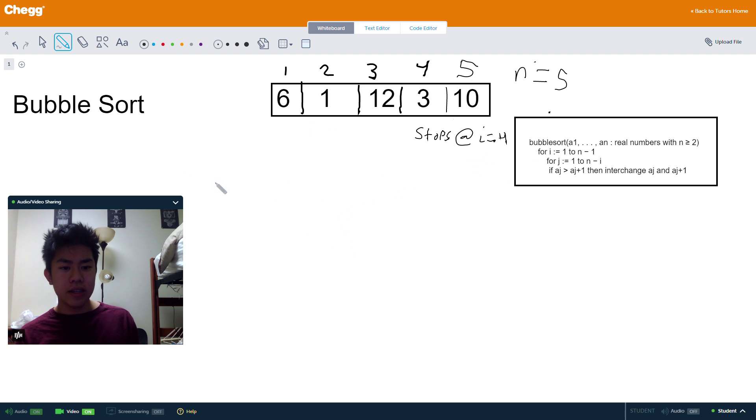Alright, let's run through the loop. I'm going to set i equal to 1. So i is 1 now. J is also 1. J is also going to stop at 4. However, only for this first iteration. Because we have 5 minus i. And i is still 1. So, a sub j, if it is greater than a sub j plus 1, or the next number, swap them. It is. So we're going to go ahead and swap them. 1, 6, 12, 3, 10.